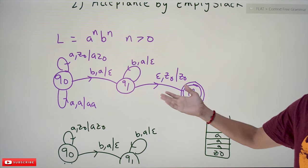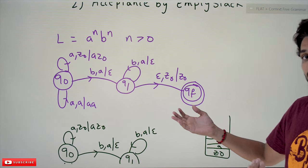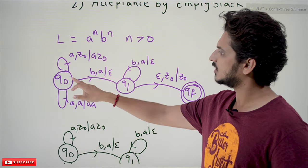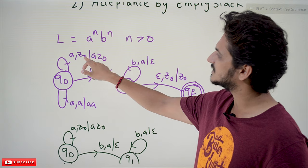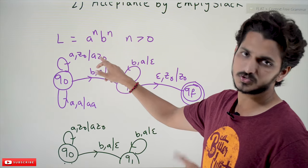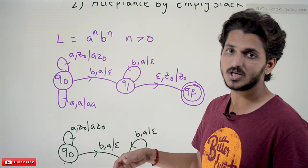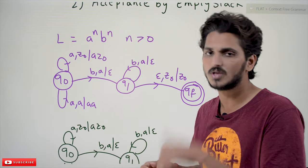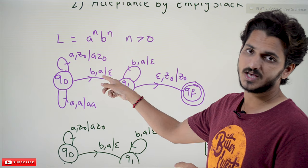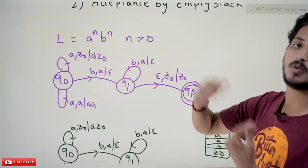Now, how do we design acceptance using a final state? Starting from q0: on q0, if you see 'a' and the stack top is z0, we push 'a' onto the stack making it a z0. If you see 'a' and the stack top is 'a', we push another 'a'. When you see 'b' and the stack top is 'a', we pop the 'a'.